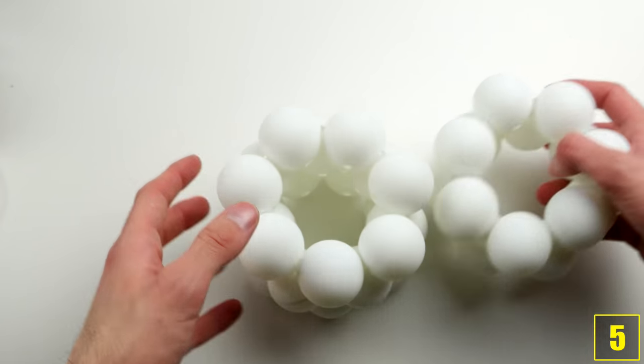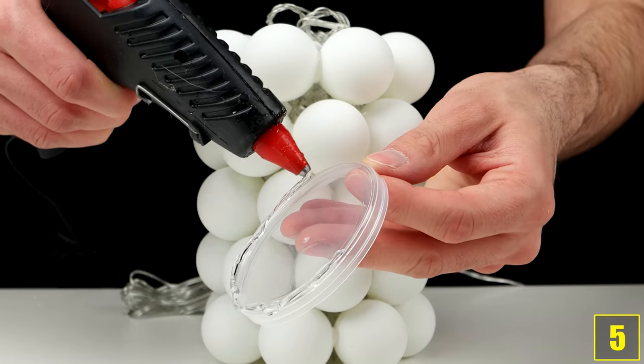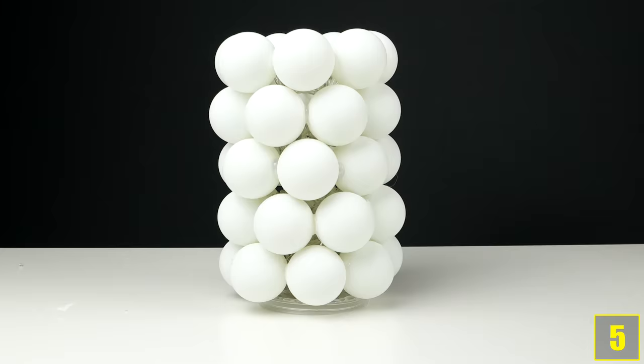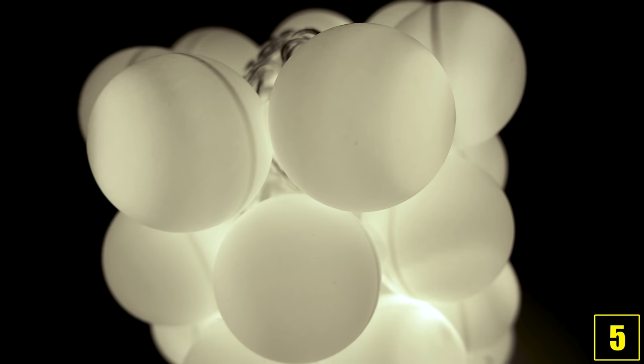Now take off the upper parts and start placing the fairy lights in the holes. In the end, you can use the lid of a chips can, for example, as a foot for your lamp. Now just turn it around and turn it on. Let there be light!